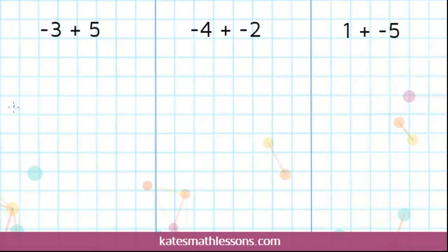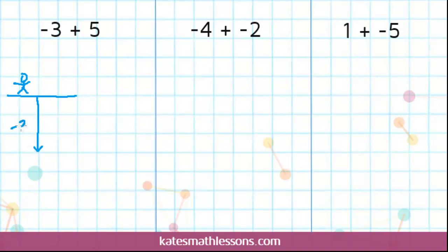One way to visualize this is to imagine that you're standing on the ground. So let's say this line represents the ground, and here's you — you're standing at ground level. This negative 3 that you start with, you can think of that as if you are digging a hole 3 units down into the ground. So you're in the hole 3.